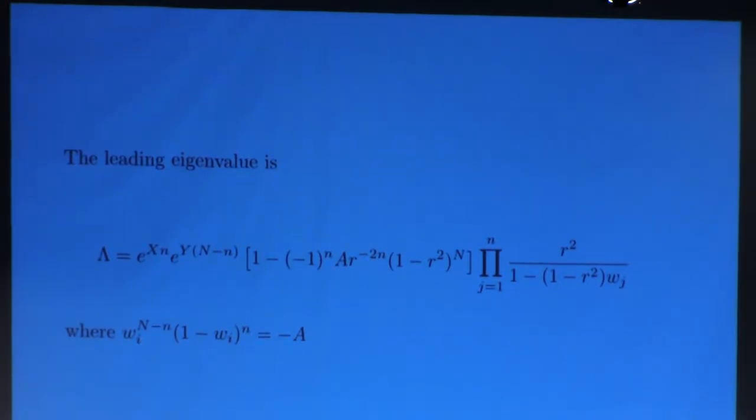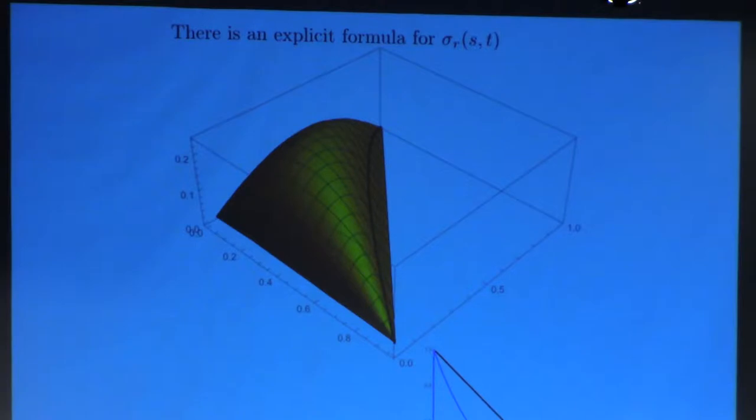It's just lambda sub little n. That should be lambda sub little n. I agree. Okay. Well, all right. So now I'm going to save you a lot of calculation. I'll just display the answer here. Here's the explicit formula for the surface tension.